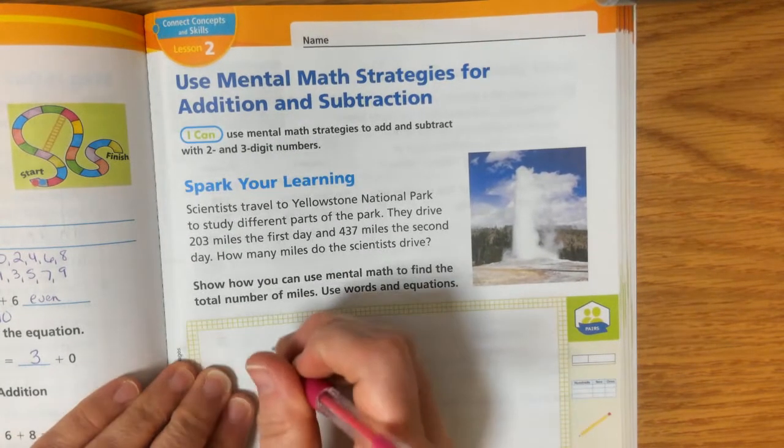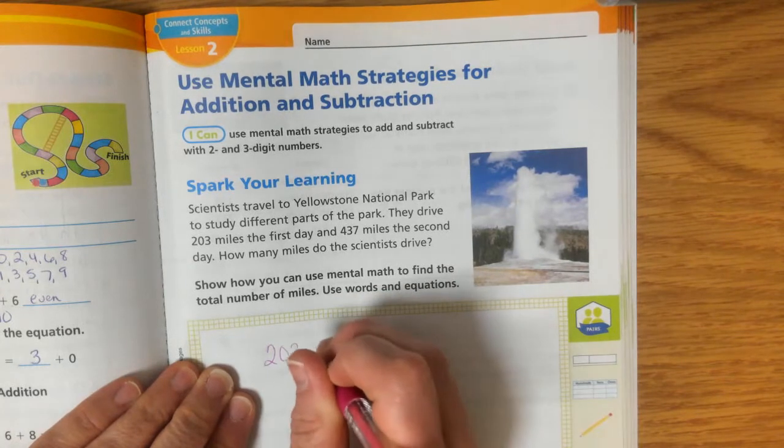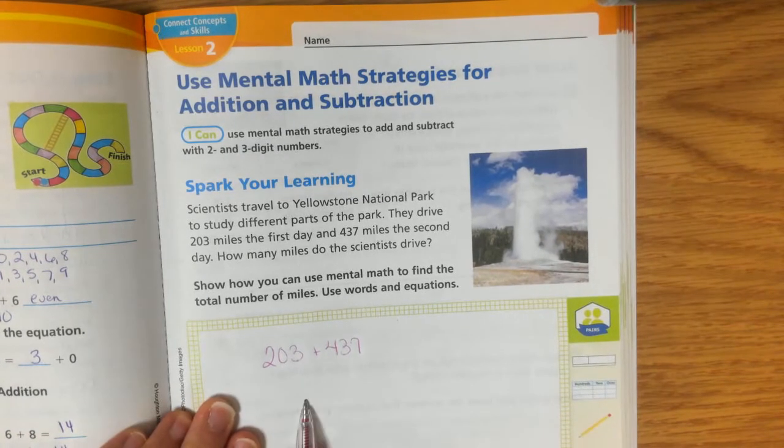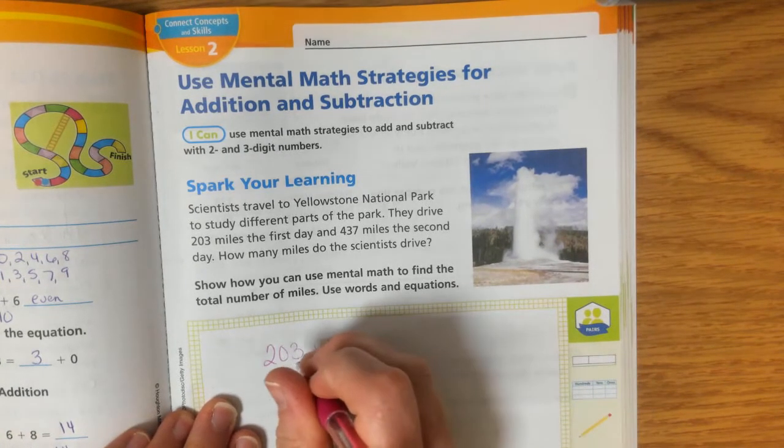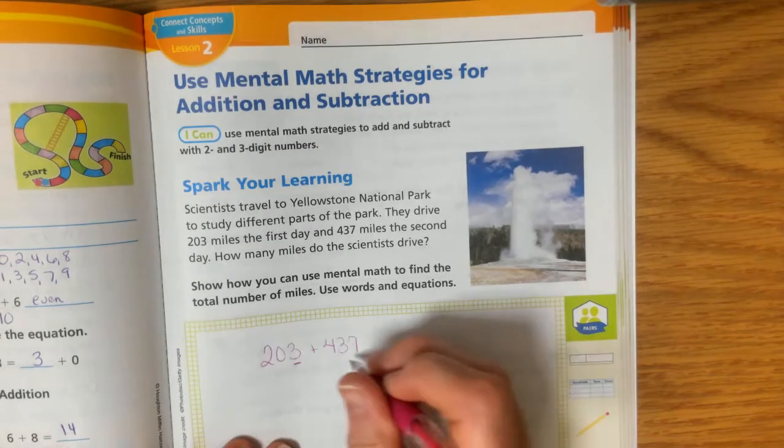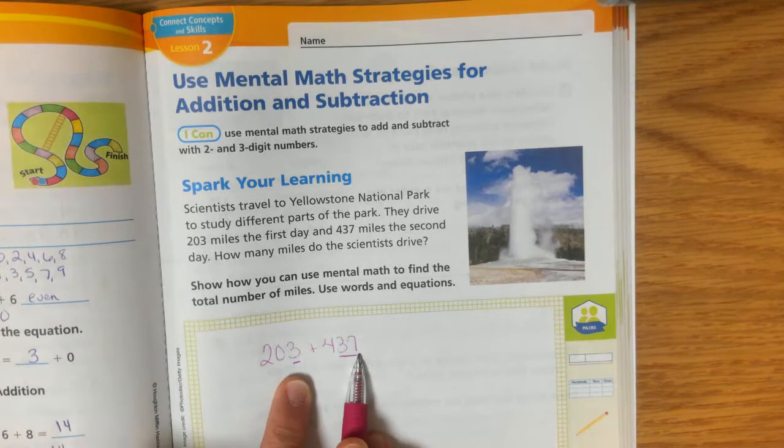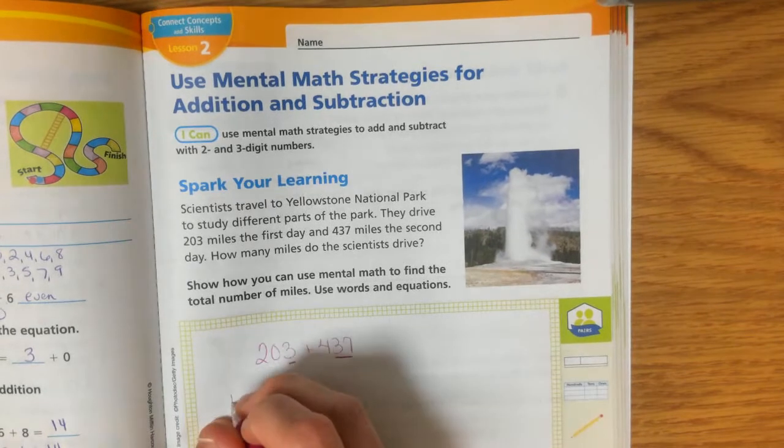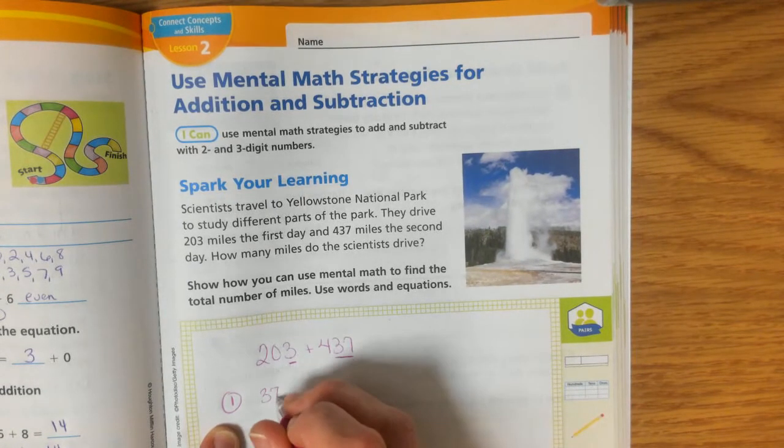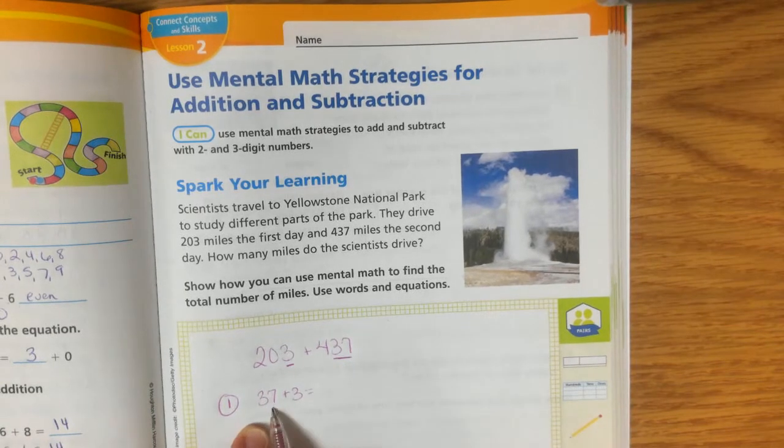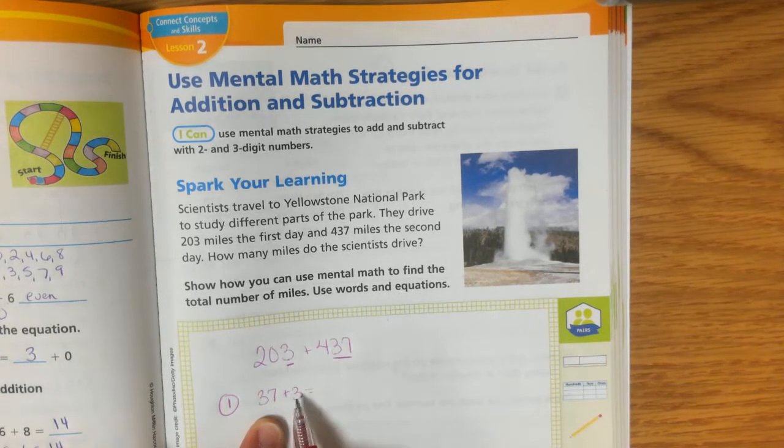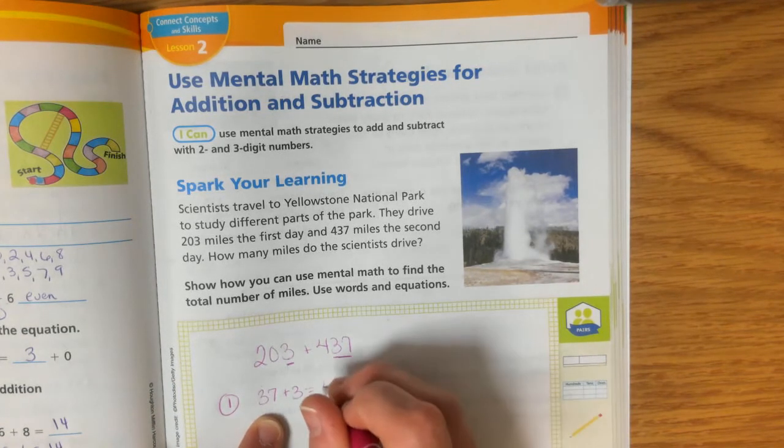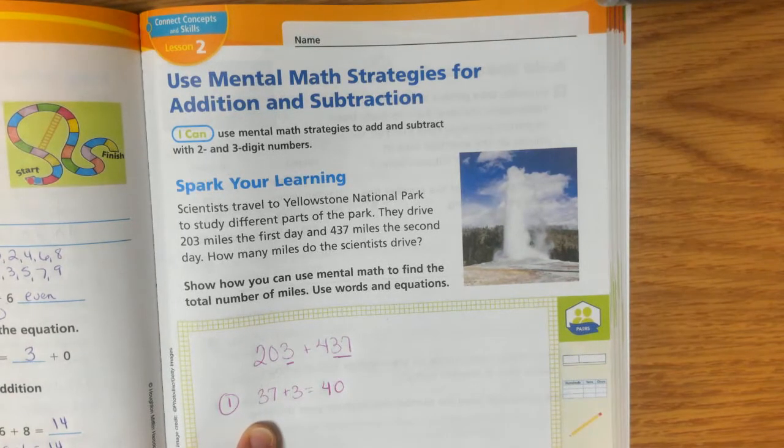I can see that I'm going to be adding 203 plus 437. When I look at my numbers, I'm noticing that I have a 3 in my ones place and then I have 37 here. One thing I know about 3 and 7 is that it makes a 10. So what if the first step is to add 37 plus 3? When I do 37 plus 3, I know that if I have 7 plus 3, that equals 10, and I have to regroup a 1, which would make 40. So 37 plus 3 equals 40.